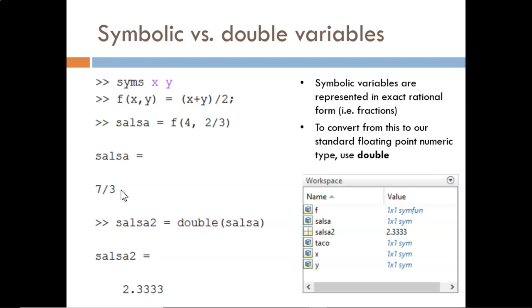This differs from the numeric data types we have been using, which represent numbers as floating point decimals. To convert this to the standard double type, use the double command as shown. Notice how this changes the display in the command window. Also, notice the difference within the workspace.